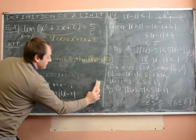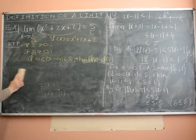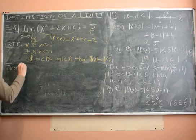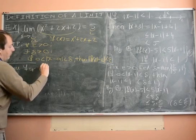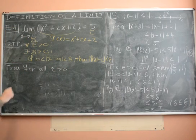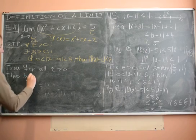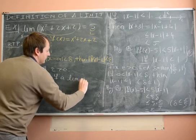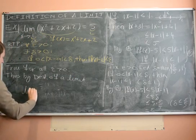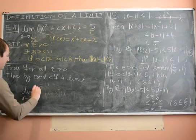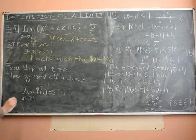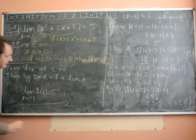Let me finish off the proof by saying: this holds for all epsilon greater than 0. So by the definition of a limit, the limit as x goes to 1 of f(x) is 5. And that's the end of the proof.